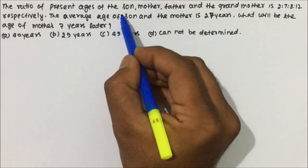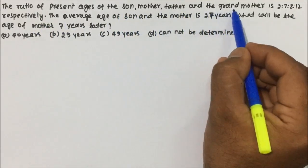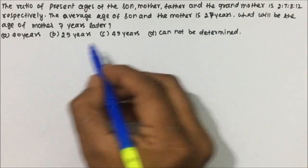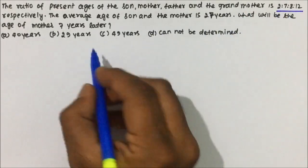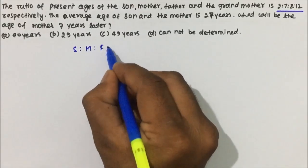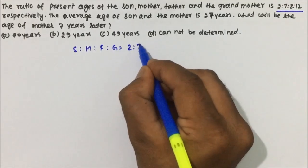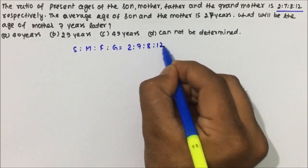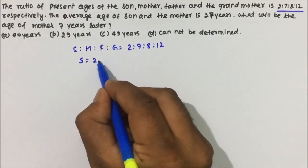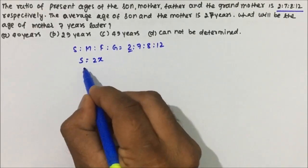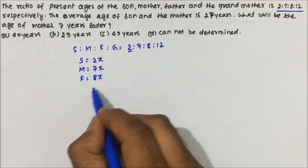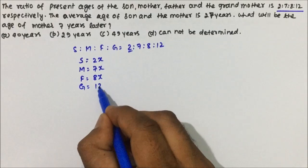Let's move to question number 2. The ratio of the present ages of son, mother, father, and grandmother is 2:7:8:12. The question is again given in the ratio format. Multiplying by a variable x: son's age = 2x, mother's age = 7x, father's age = 8x, and grandmother's age = 12x.